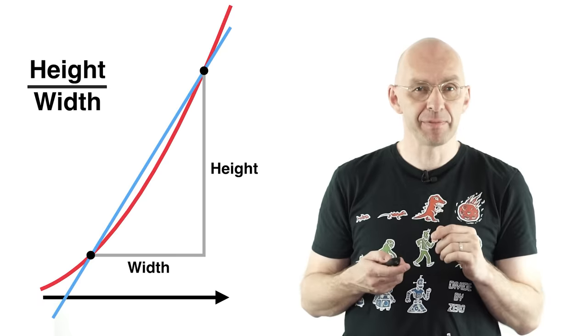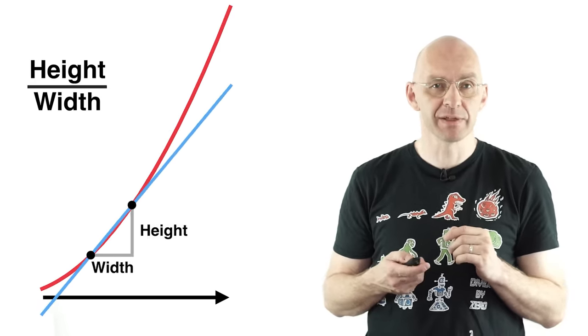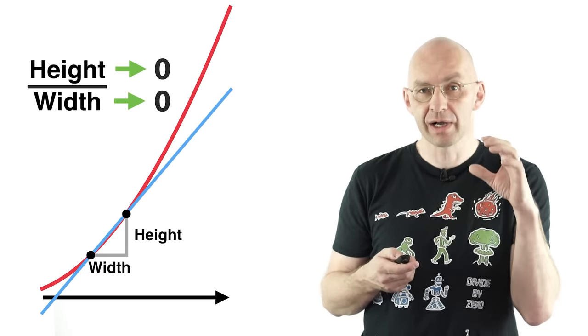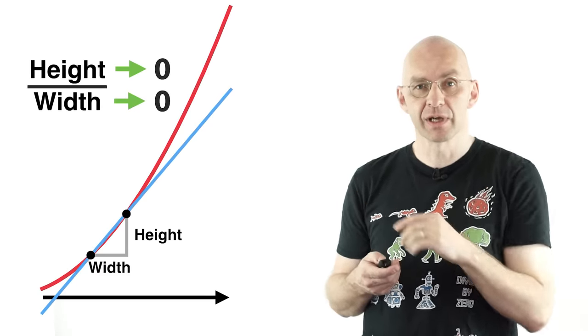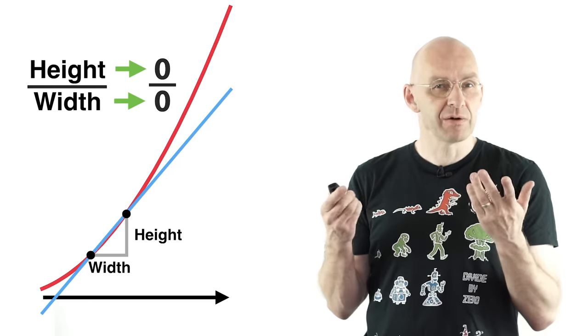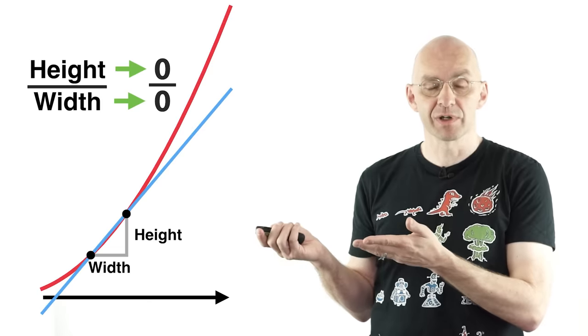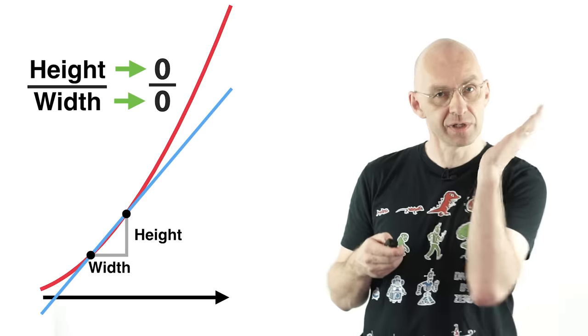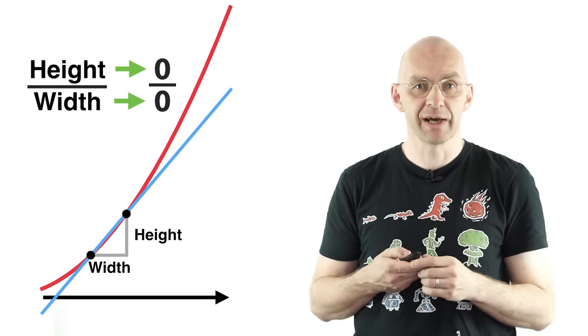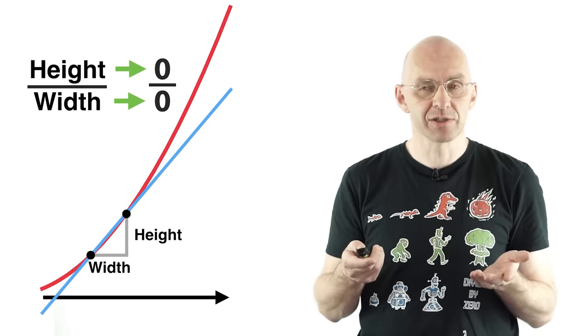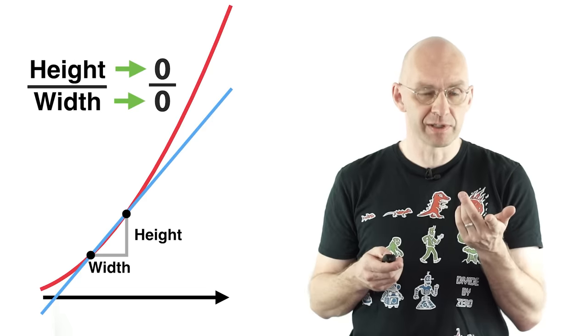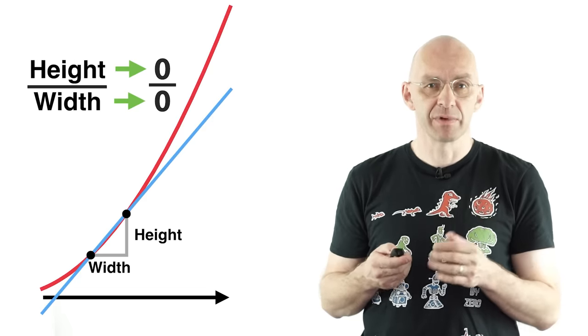But now see what happens when I move the two points together, both the height and the width approach zero. So overall the slope approaches this forbidden zero divided by zero. But now nothing really terrible happens. You would expect something terrible happens but nothing terrible happens. We're just getting closer and closer to this slope of the touching line. So that seems a bit strange but just remember that equation that corresponds to zero divided by zero has all numbers as solutions.